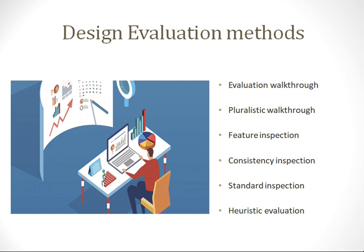The fourth method is consistency inspection. You test whether the product is consistent with what was claimed. If your product is supposed to be a good design, durable, or whatever you stated, you check whether the product actually delivers on those claims. These first four methods can be done by experts, designers themselves, or people who are knowledgeable about evaluation.